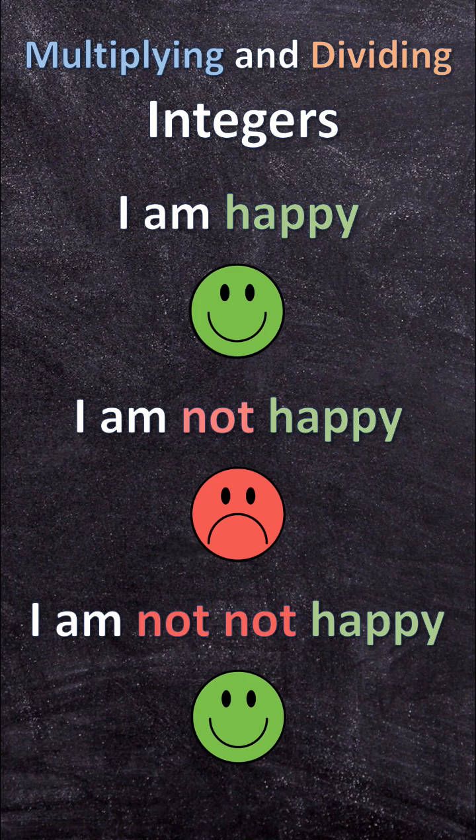So when I have a positive and I multiply or divide it by a negative, your answer is going to be negative. And when I have a negative and I times or divide it with a positive, the answer is also going to be negative.